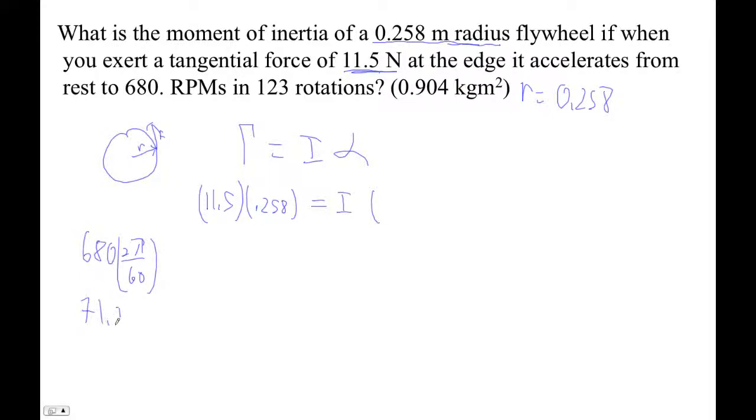This is 71.209, right? Okay, so now let's see, suvat. Let's see, 123 rotations, that's easy, 123. This is radians per second, by the way. And that's our final velocity.